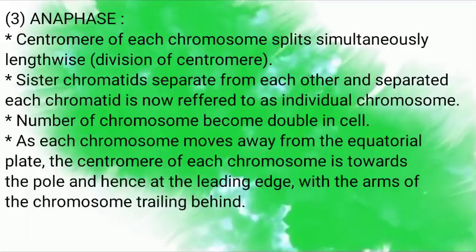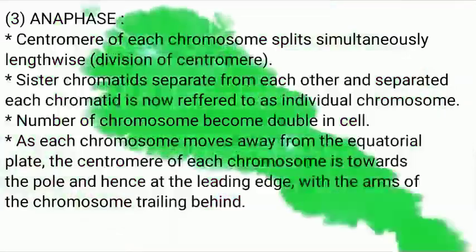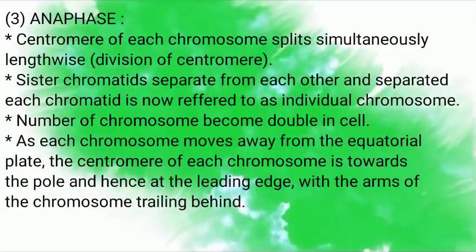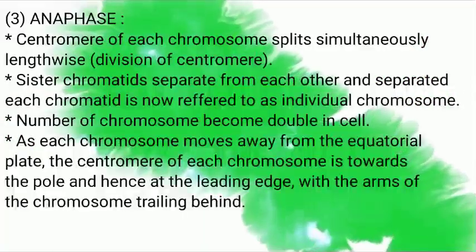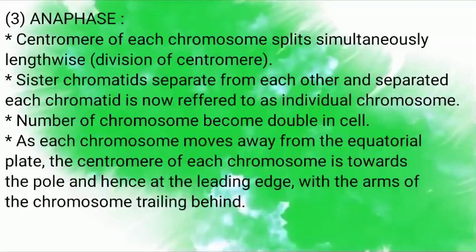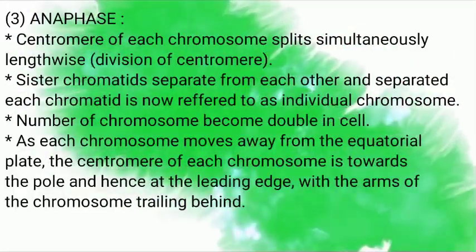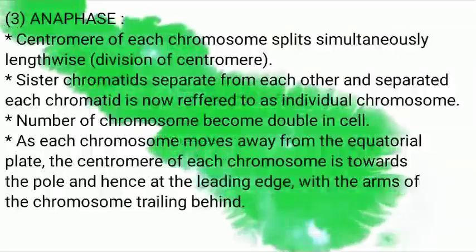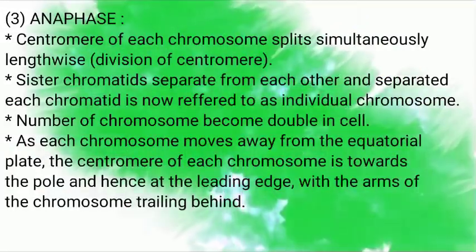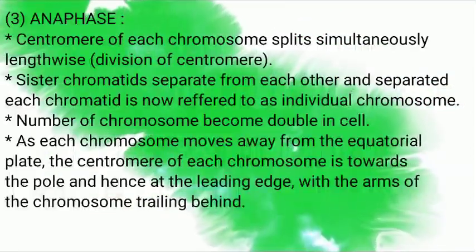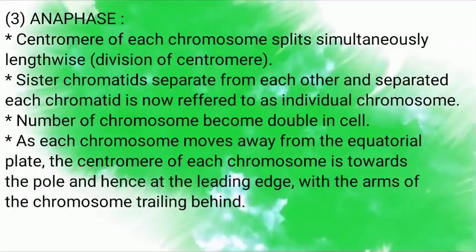Anaphase. The centromere of each chromosome splits simultaneously, particularly lengthwise. The division of centromere occurs in anaphase. Sister chromatids separate from each other, and each separated chromatid is now referred to as an individual chromosome. The number of chromosomes becomes double in the cell. The major event in anaphase is centromere splitting lengthwise, and the chromosomal centromeres split to form daughter chromosomes.